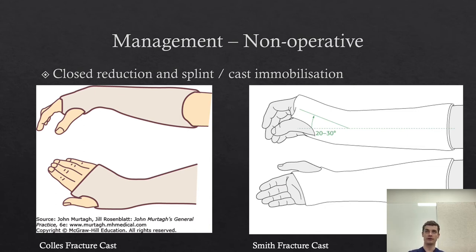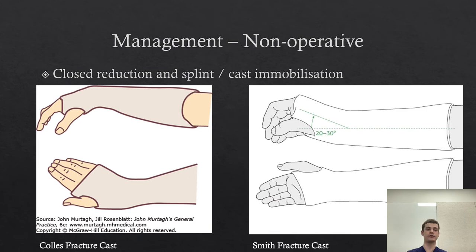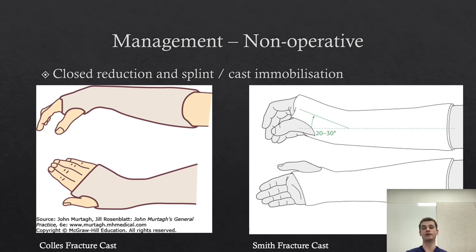Whether non-operative reduction is the only management required often depends on whether it's an intra- or extra-articular fracture, the age of the patient, and the mobility and usage of their hand. You may be more inclined toward operative management in a young patient with a comminuted intra-articular fracture who would have a long history of problems with that wrist if not well reduced on post-reduction film. But in an older patient who may not cope well with anaesthetic and has a reasonable reduction — particularly in an extra-articular fracture — these can very often be managed non-operatively.